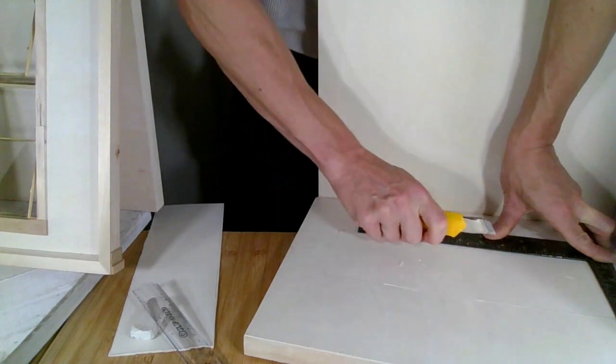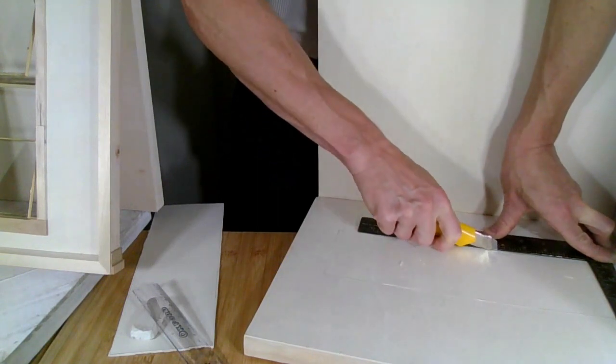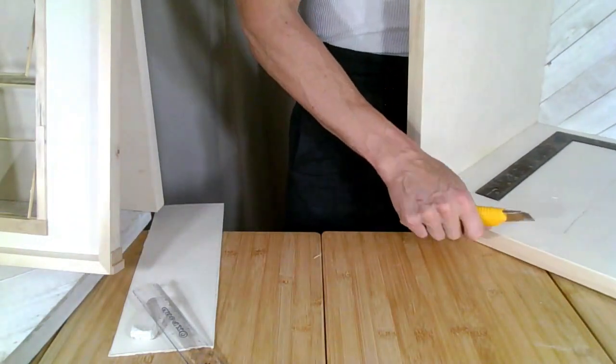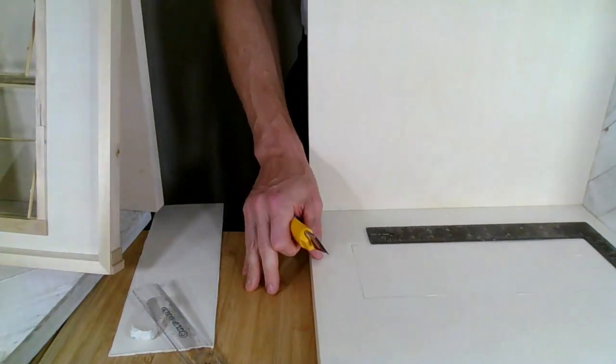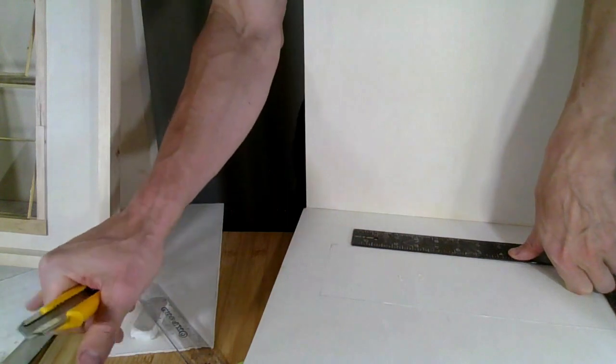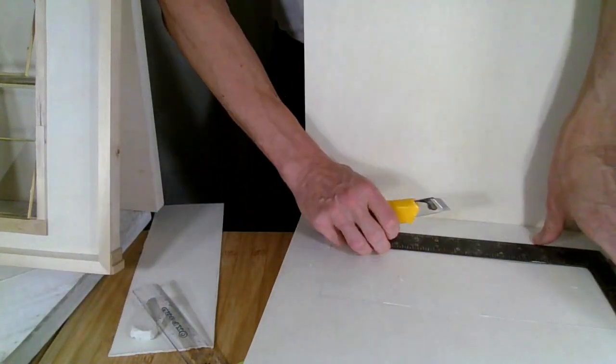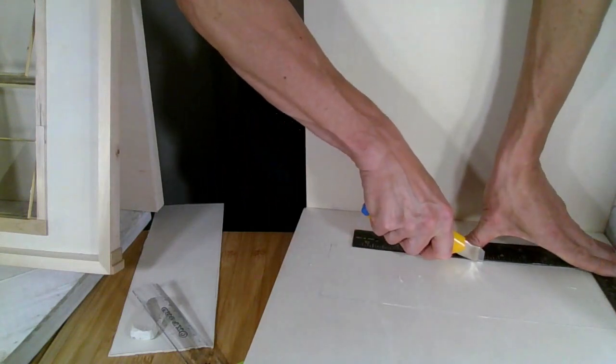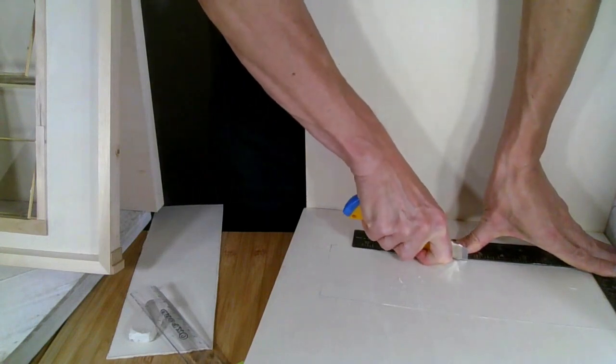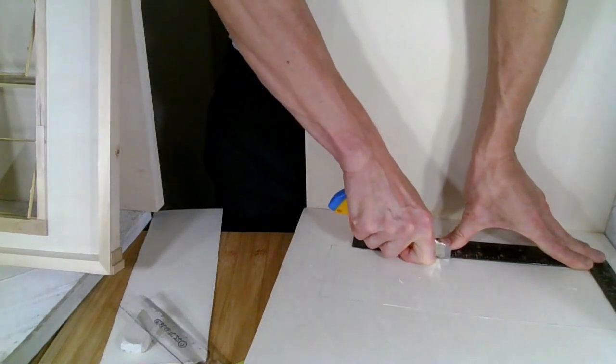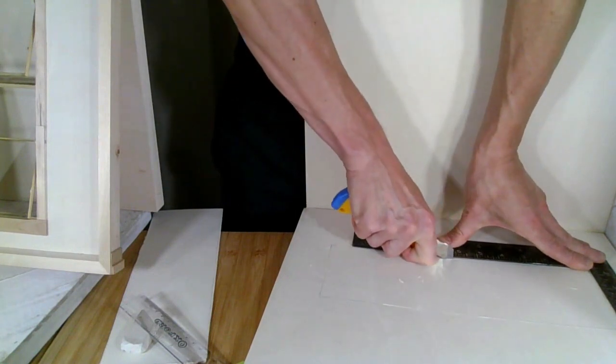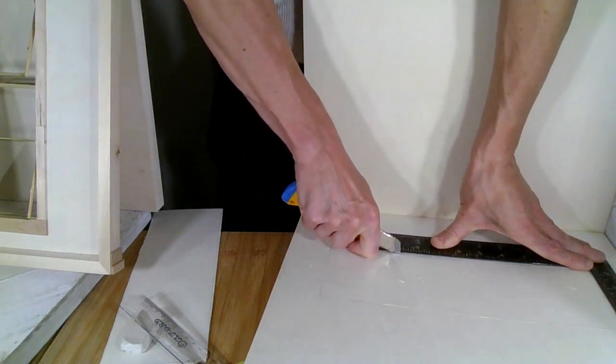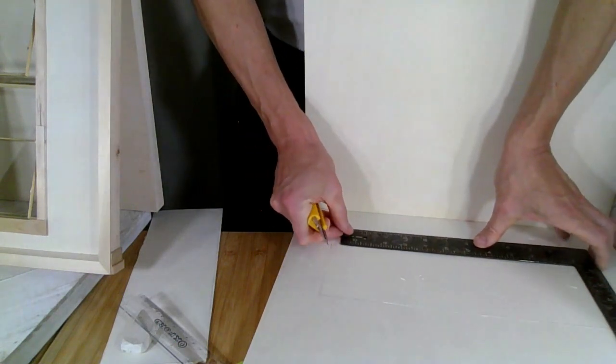I'm just going to score this over and over. I never knew how I was going to cut through these boards, but this actually does work. Just take your time and score slowly. And you'll eventually go through. And you just keep cutting and cutting until it goes through. And don't be like me. Put a protective surface down.